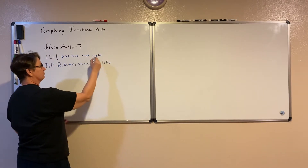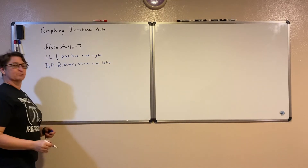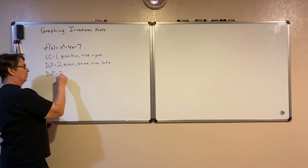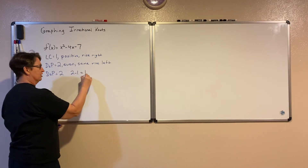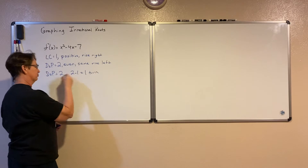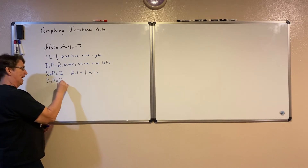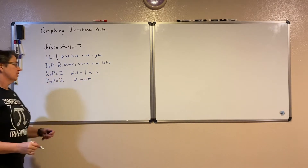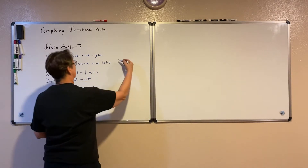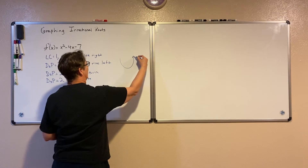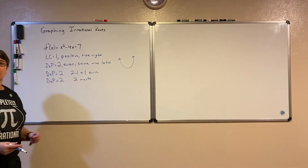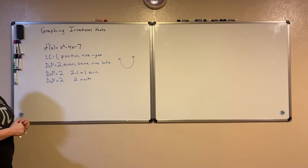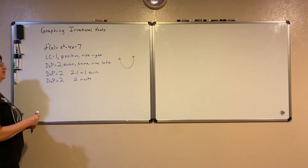So since it rises on the right, it's also going to rise on the left. We know because our degree is 2 that we will have one turn — one less turn than the degree — and that we have two roots to this quadratic. So we can give a little sketch: it's going to rise on the right, rise on the left, have one turn. Our ending function should look something like that. That's step 1 of finding and graphing this quadratic.